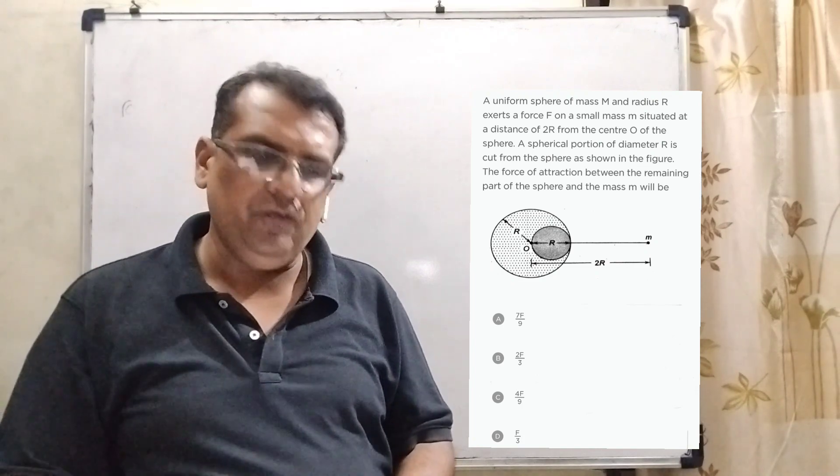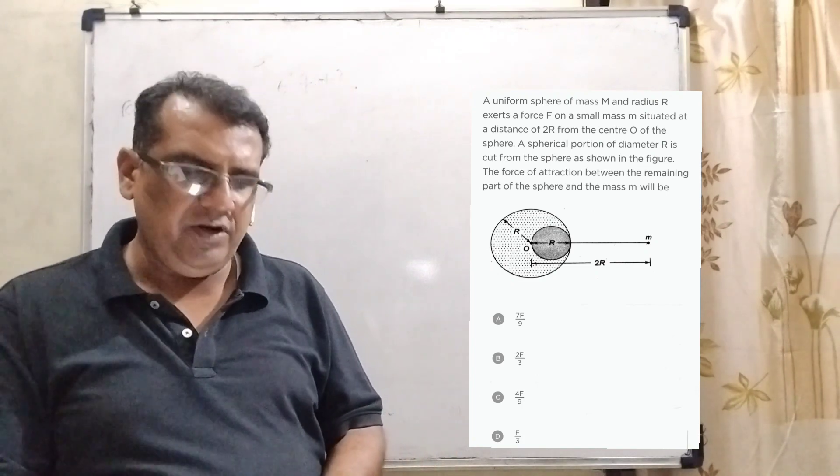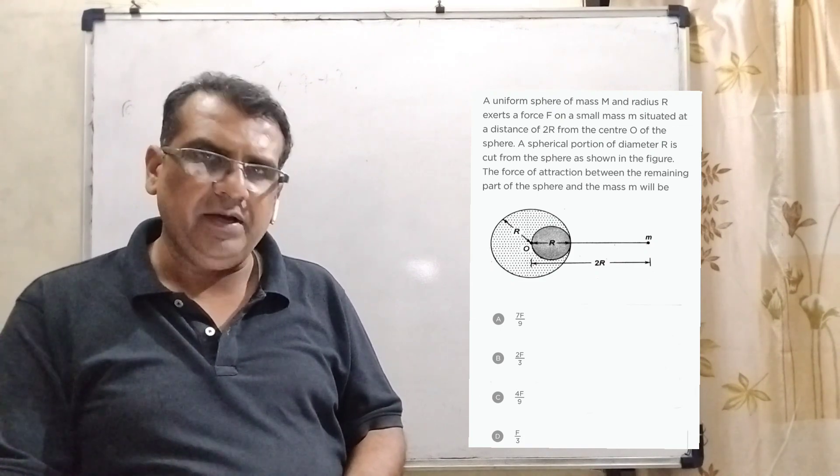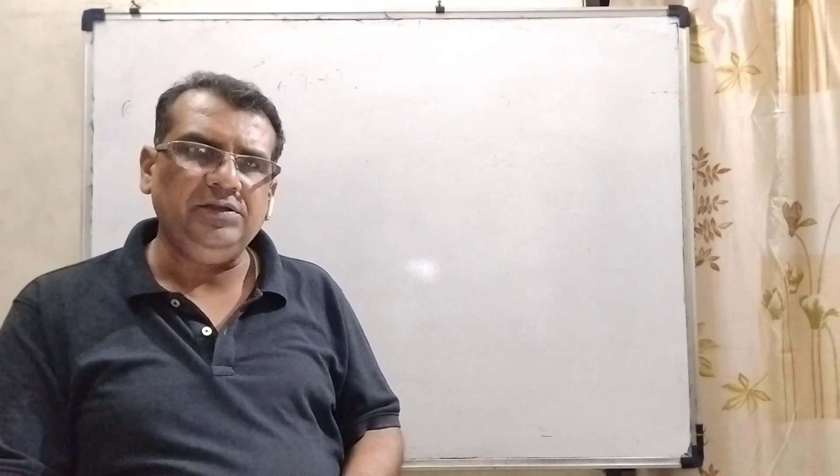Here we have given four options. Option A, 7f by 9. Option B, 2f by 3. Option C, 4f by 9. Option D, f by 3.